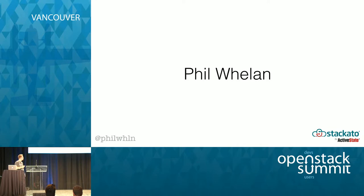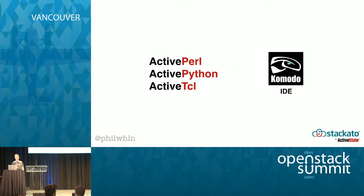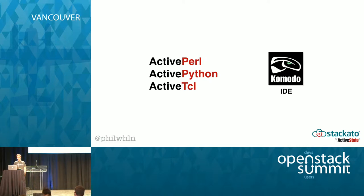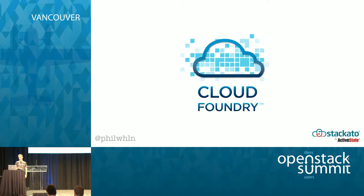Staccato on OpenStack. I'm Phil Whelan. I work on a product called Staccato at ActiveState. ActiveState is known for products such as enterprise versions of dynamic languages — ActivePerl, ActivePython, etc. — and Komodo IDE. But over the past several years, we've been working hard on platform-as-a-service Staccato, which is based on the Cloud Foundry open source project.